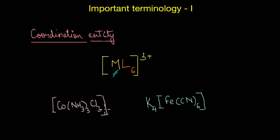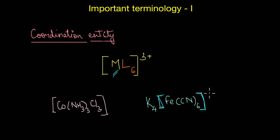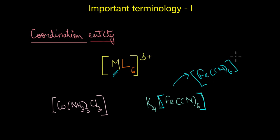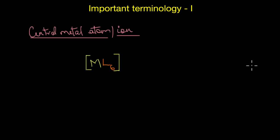For example, Co(NH3)3Cl3 is a coordination entity where the cobalt metal ion is bonded to three chloride ions and three ammonia molecules. Similarly, the coordination entity in K4[Fe(CN)6] is the entity enclosed within the square brackets, which is [Fe(CN)6]4−.